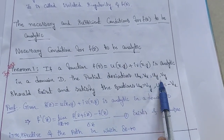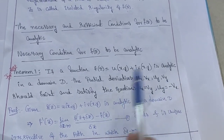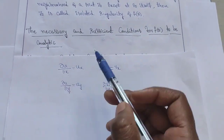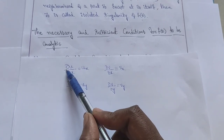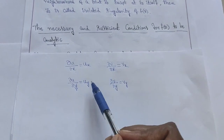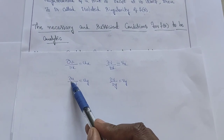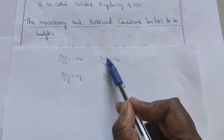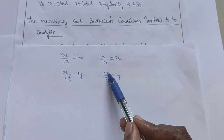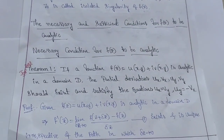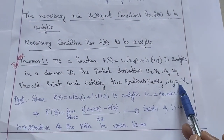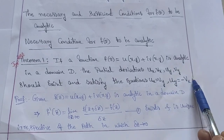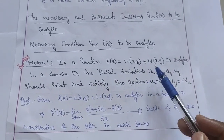Here Ux, Vx, Uy, Vy are all partial derivatives. Ux is the partial derivative of U with respect to x, Uy is the partial derivative of U with respect to y, Vx is the partial derivative of V with respect to x, and Vy is the partial derivative of V with respect to y. The equations Ux equals Vy and Uy equals minus Vx are called the CR equations or Cauchy-Riemann equations. If these two conditions are satisfied, then f of z is analytic.